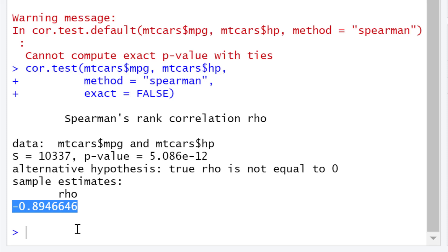indicates a perfectly positive association. So negative 0.89 is a very strong negative correlation in this case between the variables mpg and horsepower. In other words, as the mpg increases, the horsepower decreases.